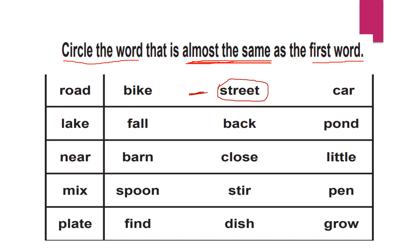The frog is hopping, and where does he live? In the pond, right? So that is lake. You need to recollect and brainstorm your mind. Lake meaning is 'pond.'